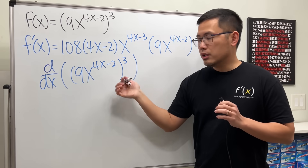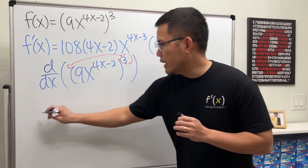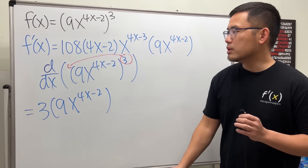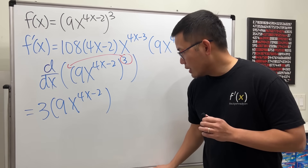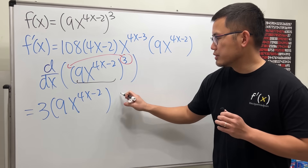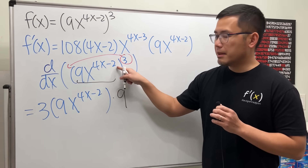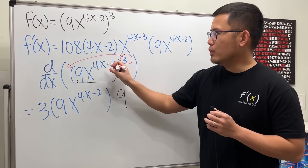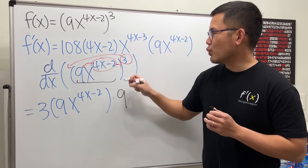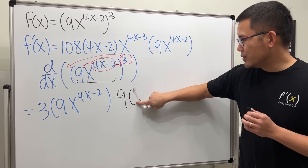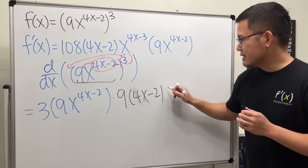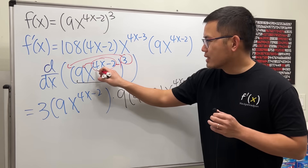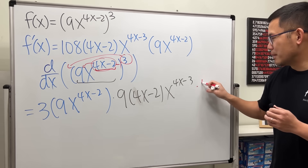We have this thing to the third power, so the approach was to bring the power to the front, getting 3 times (9x to the 4x minus 2), and then use the chain rule. Since 9 is a constant multiple, we multiply by 9, and then take the derivative of x to the (4x minus 2). It appears what happened was treating this as a standard power situation: bring (4x minus 2) to the front, subtract 1 to get x to the (4x minus 3), then multiply by the derivative of (4x minus 2), which is 4.